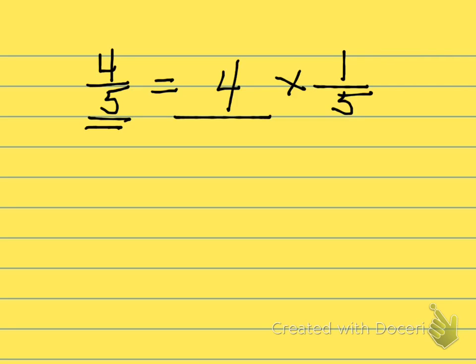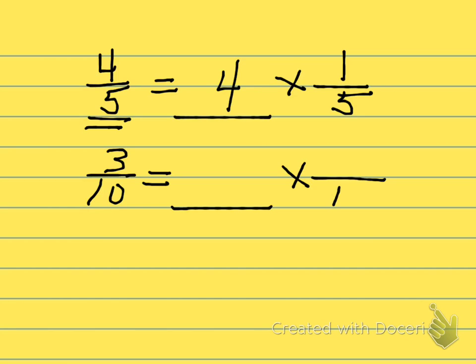Let's try this again. What would the fraction three-tenths look like in a number sentence when I multiply a whole number times a unit fraction? What would my unit fraction be? What is the denominator? The denominators stay the same — tenths. A unit fraction always has a numerator of one, so one-tenth is my unit fraction. What whole number can I multiply times one-tenth to get the product of three-tenths? Three times one-tenth equals three-tenths.